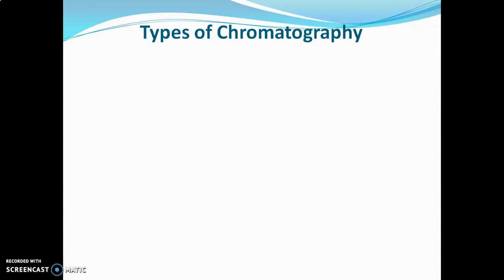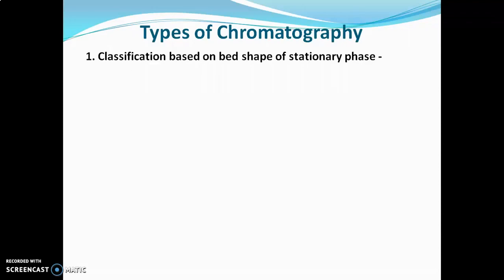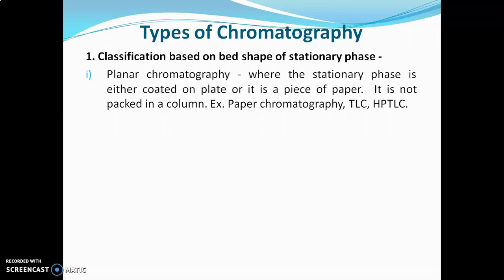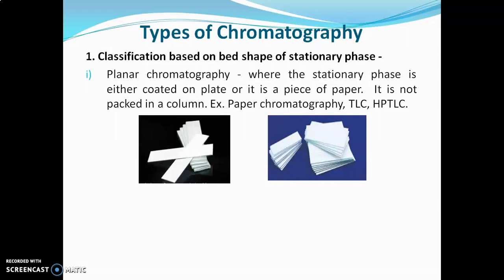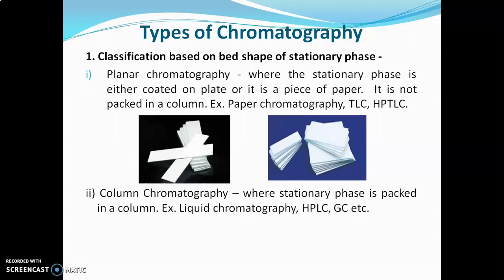Now we will go for classification of chromatography. The first classification is based on bed shape of the stationary phase. The first class is planar chromatography, where the stationary phase is either coated on a plate or is a piece of paper — it is not packed in a column. Examples include paper chromatography, TLC, and HPTLC. These plates used in TLC and HPTLC have stationary phase coated on them, and since the chromatography is in the open and not packed in a column, it is known as planar chromatography.